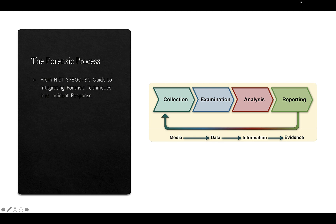The forensic process is outlined in the NIST SP 800-86 guide to integrating forensic techniques into incident response. They specify four stages: collection, examination, analysis, and reporting. This involves looking for data on media, extracting information from it, analyzing it, and turning it into usable evidence. It's not enough to simply find data on a disk — you need to know the scope of what you're looking for and how it would establish evidence supporting a claim by prosecutors or the defense.